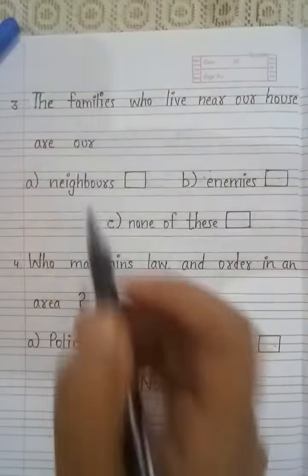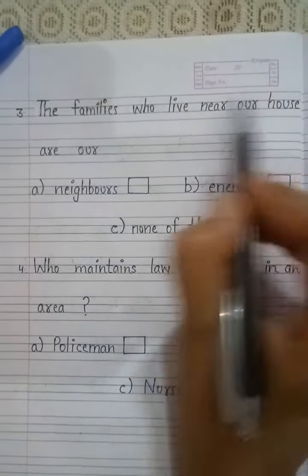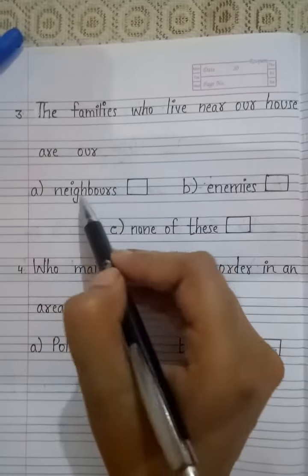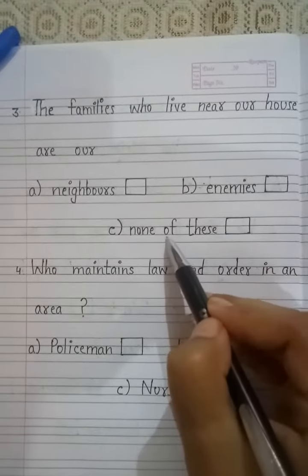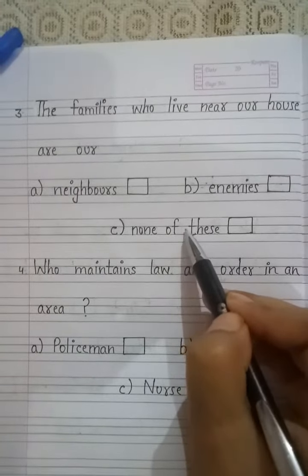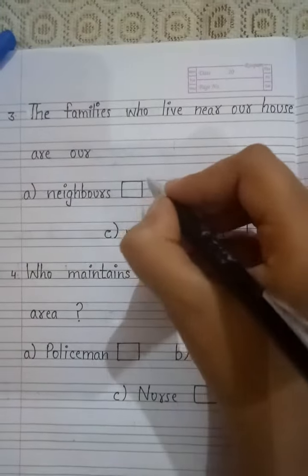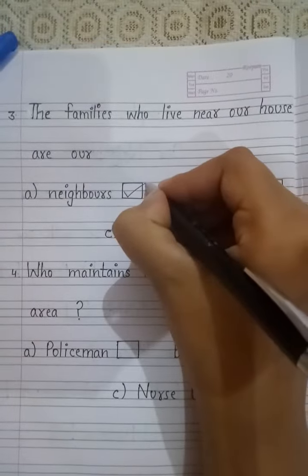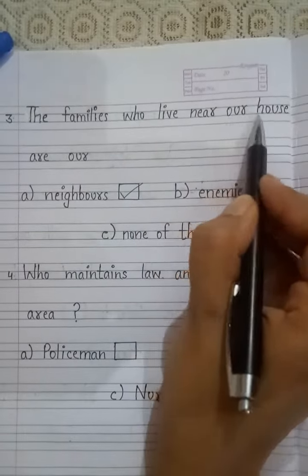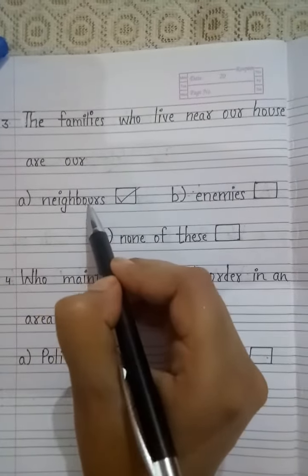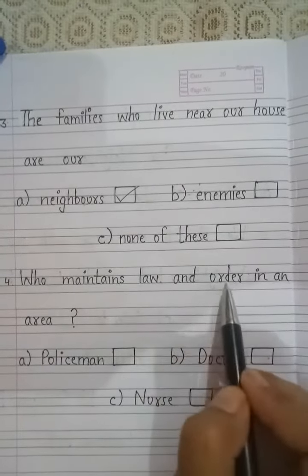Third question: the families who live near our house are our ___. Options are: a) neighbors, b) enemies, c) none of these. The families who live near our house are our neighbors, so I will tick on neighbors.